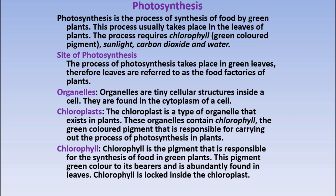This process usually takes place in the leaves of plants. Yeh jo photosynthesis ka process hota hai, wo leaves mein hota hai. The process requires chlorophyll — a green colored pigment — sunlight, carbon dioxide and water. Photosynthesis ke liye green color pigment, jisko hum chlorophyll kehte hain, jo green plants ke leaves mein present hote hain, sunlight, carbon dioxide and water — all things are required for the process of photosynthesis.